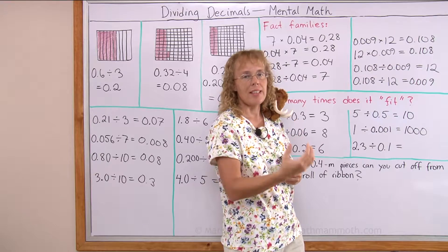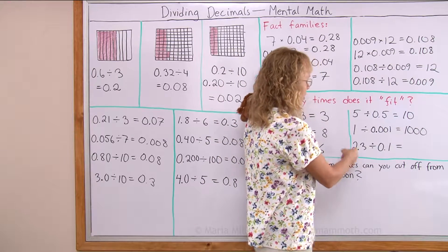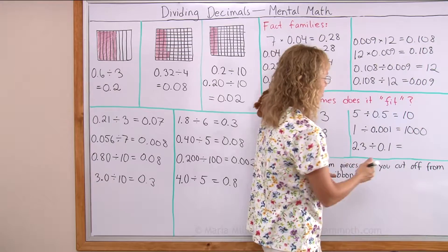Or how many tenths are in 2 and 3 tenths? Well, in 1 you would have 10 tenths. In 2 you would have 20, and then there's 3 more. So, 23.